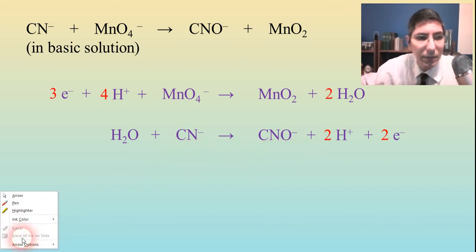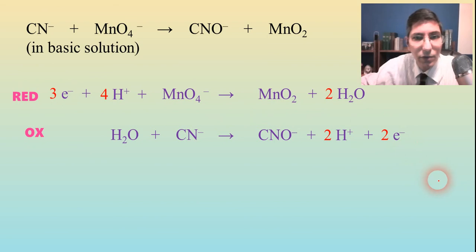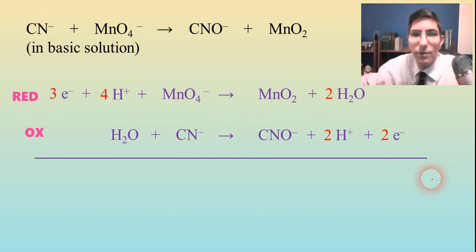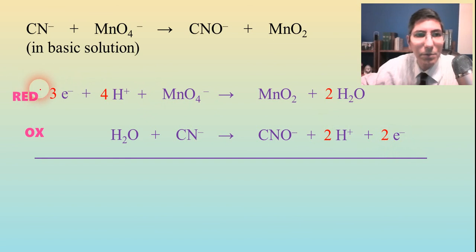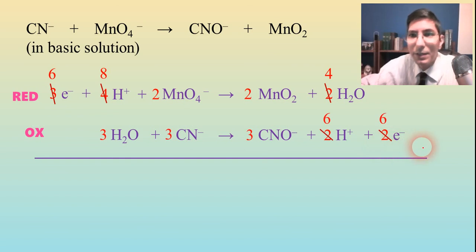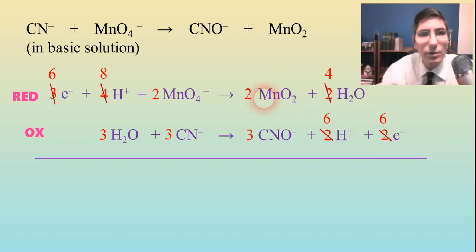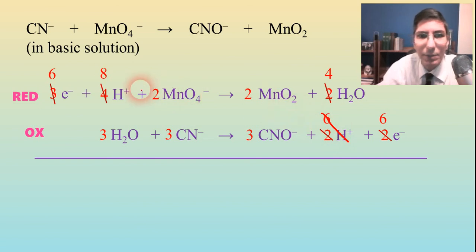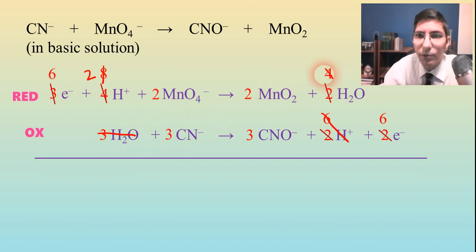Now let's add them together. We have three electrons versus two electrons, so I multiply the top one by two and the bottom one by three to get six electrons being transferred. When I add these together, the electrons cancel out. Six of the H⁺ ions on both sides cancel, bumping me down to two H⁺. The water molecules also partially cancel — three cancel with three of those four, leaving just one water molecule.